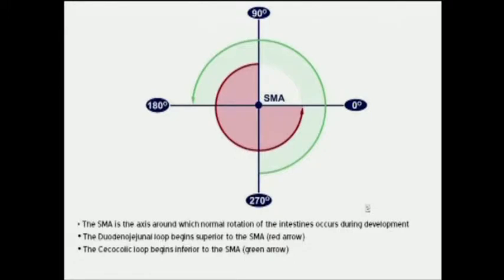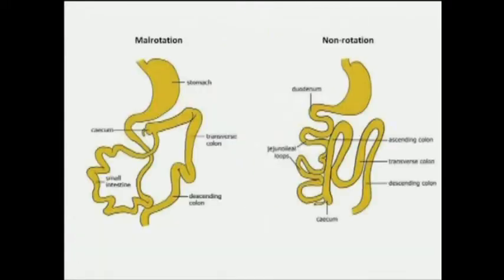This next figure summarizes the normal rotation of the colon around the superior mesenteric artery, which usually occurs during fetal development. In malrotation, the cecum and the terminal ileum are located in the left upper quadrant and the ligament of Treitz in the right. In non-rotation, the colon lacks its normal attachments and lies on the left side of the abdomen, with the small bowel mostly on the right.